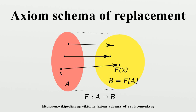This version of collection also lacks the uniqueness requirement on phi. Suppose that the free variables of phi are among W1, ..., WN, X, Y, but neither A nor B is free in phi. The relation defined by phi is not required to be a function. Some X in A may correspond to multiple Y in B. In this case, the image set B whose existence is asserted must contain at least one such Y for each X of the original set, with no guarantee that it will contain only one.